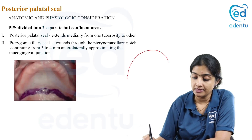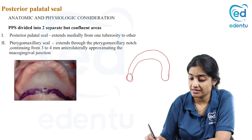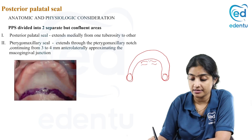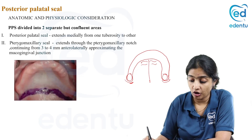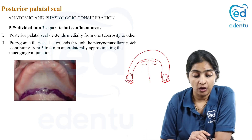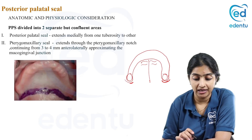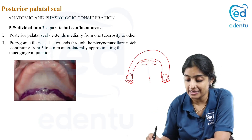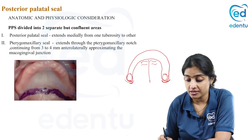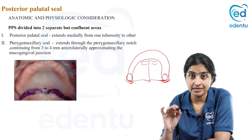Consider this to be the maxillary ridge. This is your maxillary tuberosity, and you have your rugae areas here. And here you have your hamlar notch. The posterior palatal seal is the area which extends medially from one tuberosity to the other — that is, across from one tuberosity to the other. So this area which it crosses is your posterior palatal seal.